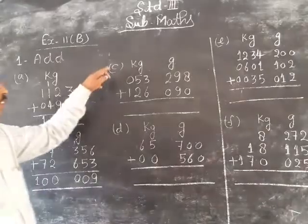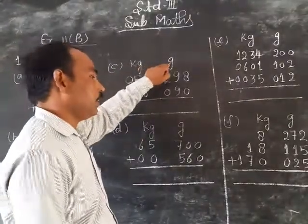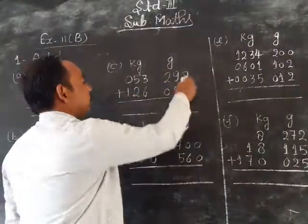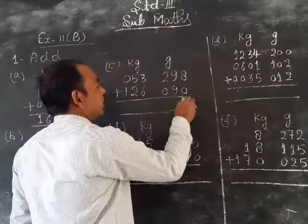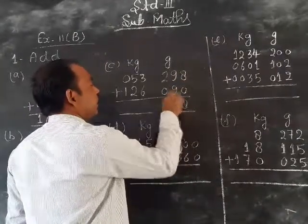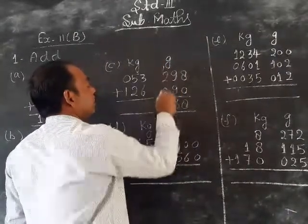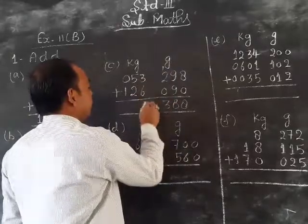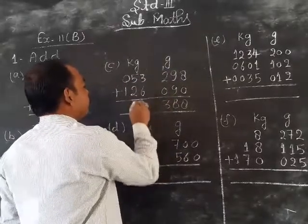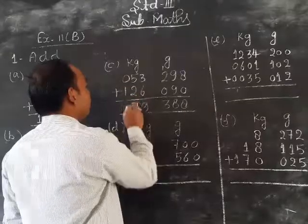Next part number C, kilogram gram. This is the idea of the add. 8 plus 0, 8. 9, 9, 18 to 8. Carry 1. 2, 1, 3. 6, 3, 9. 5, 2, 7. 0, 1, 1.